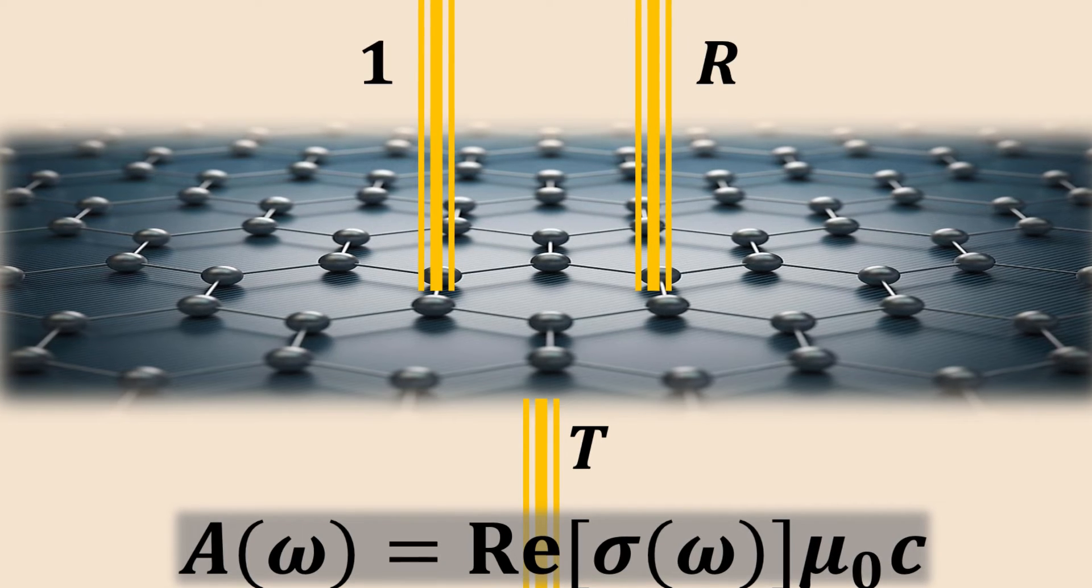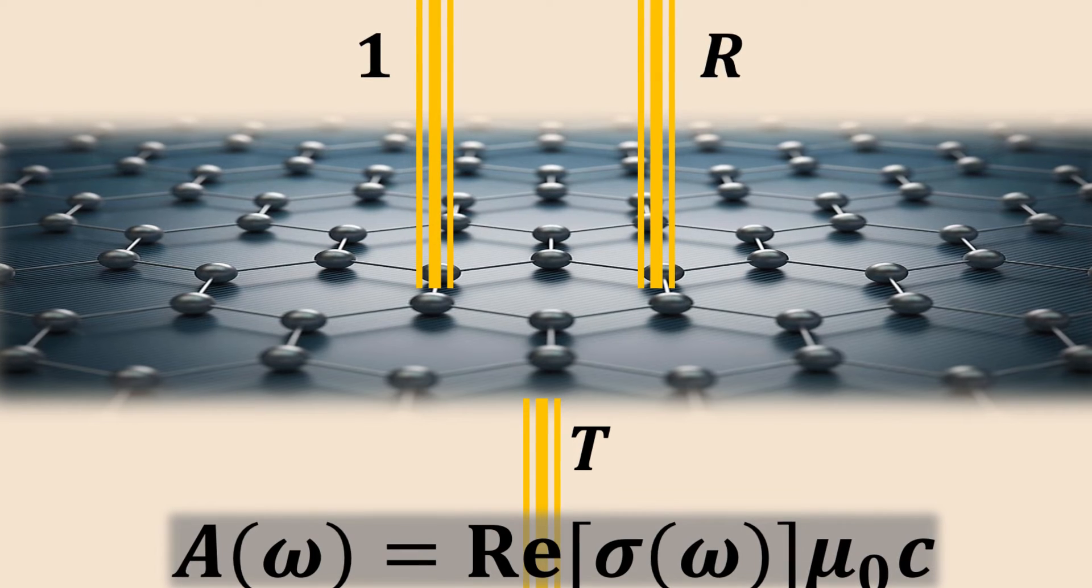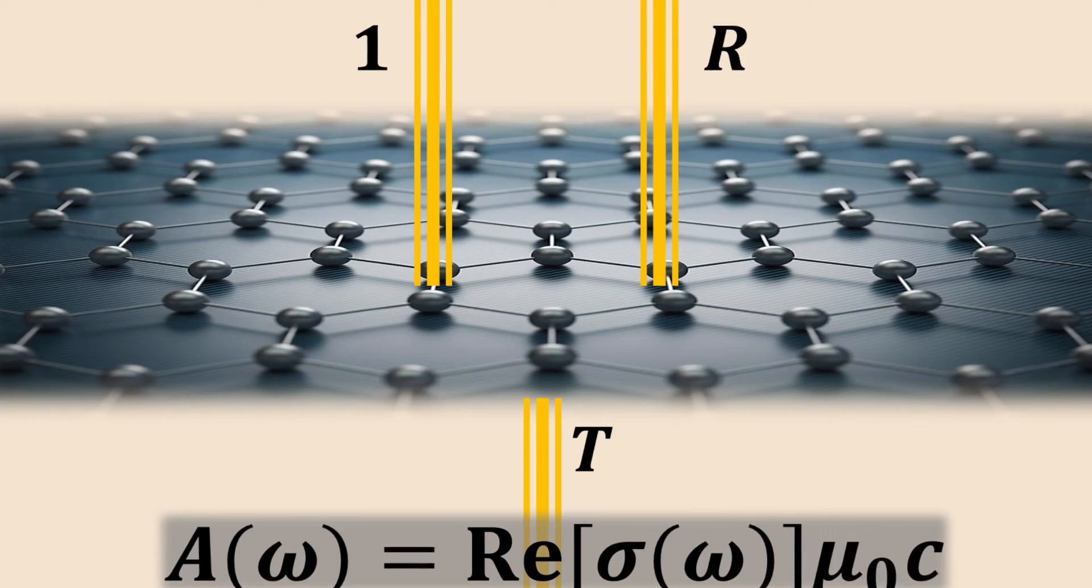The finite electric current also represents Joule losses in the form of light absorption by graphene, A, which is given by the real part of the optical conductivity times the free space permeability and the speed of light c.